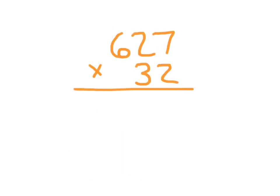Here we have a 3-digit number by a 2-digit number. Since 3 plus 2 is 5, we should end up with a 5-digit number, and sometimes you will end up with a 6-digit number. Starting with 2 times 7, which gives us 14 — place the 4 and regroup the 1. Then 2 times 2 which is 4, plus 1 which is 5. And then 2 times 6 which is 12. So 627 times 2 is 1,254.